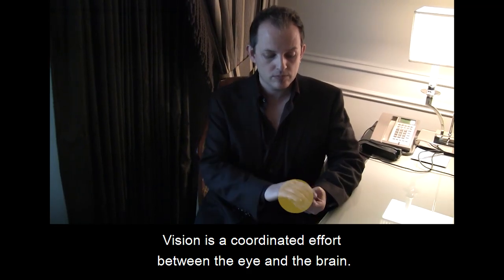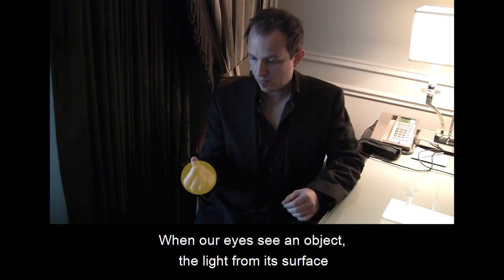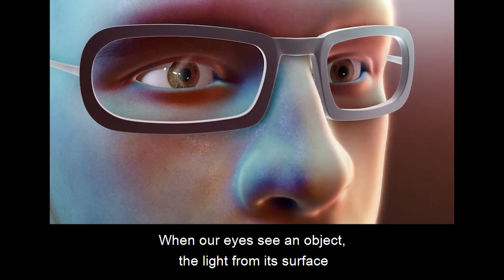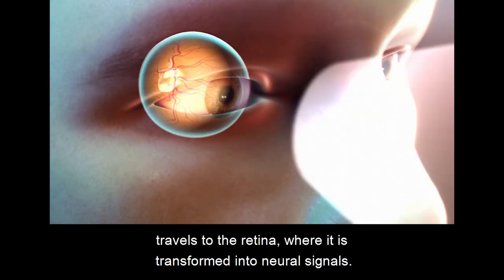Vision is a coordinated effort between the eye and brain. When our eyes see an object, the light from its surface travels to the retina, where it is transformed into neural signals.